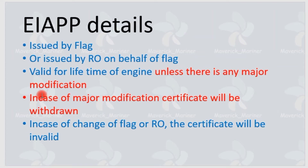If the vessel changes flag or RO, the existing EIAPP certificate becomes invalid. For example, if a vessel was registered with Marshall Islands and then re-registers with Panama, the EIAPP ceases to exist. Similarly, if a vessel changes class from ABS to Lloyd's Register, the existing certificate becomes invalid, and the new class or flag will issue a new EIAPP certificate.